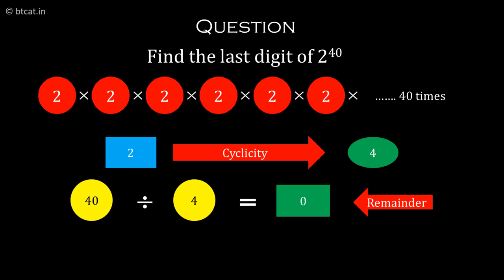So the rule says: if the remainder is 0, we raise the base to the cyclicity of that base. So it's 2 to the power 4, which gives last digit 6. This is the concept of cyclicity.